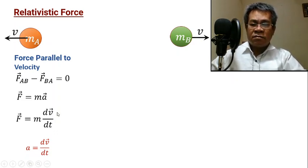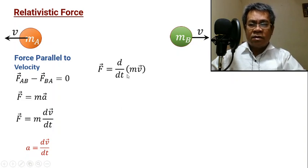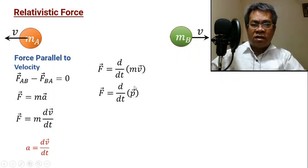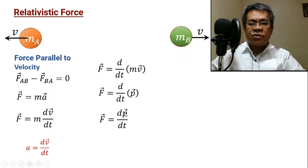Since mass is a scalar constant in classical mechanics, it can be moved inside the derivative. This gives d/dt of (mv), but mv is the momentum. So the net external force during collision is the change in momentum per time interval — dp/dt. This means force is directly proportional to the change in momentum (final minus initial).